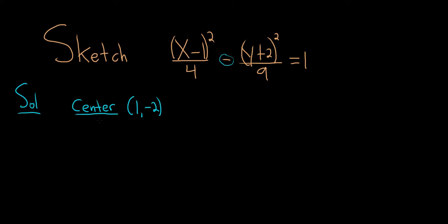The next thing you want to do is find a and b. So a is always the square root of whatever is here. So a equals the square root of 4, which equals 2. And b equals the square root of 9, which equals 3.